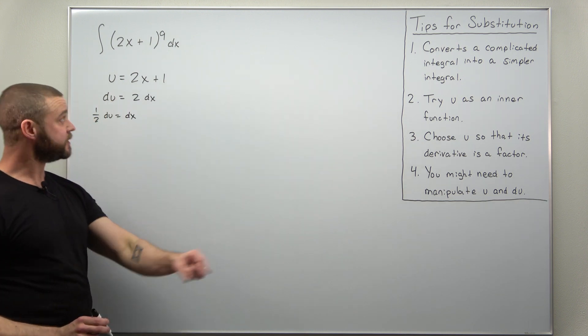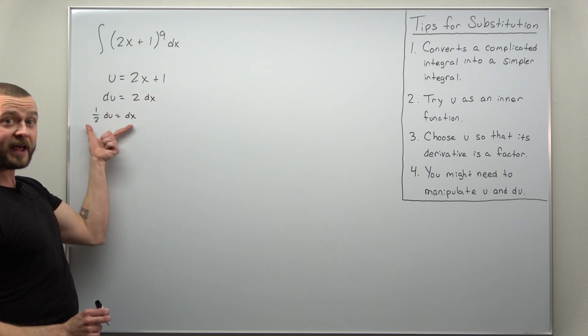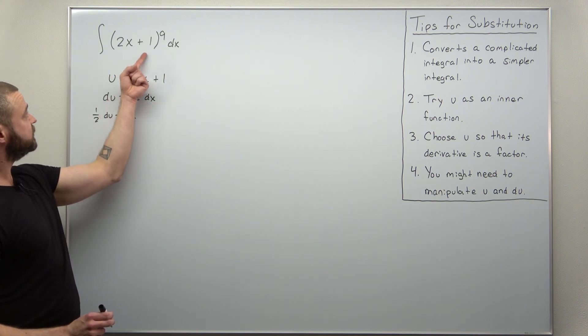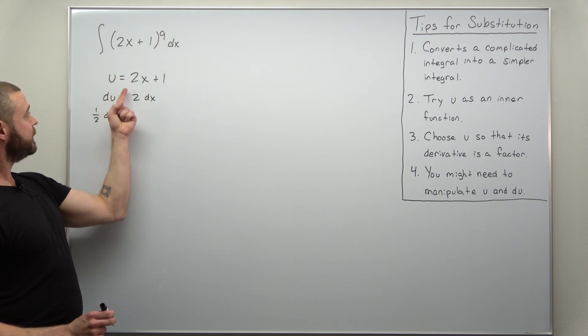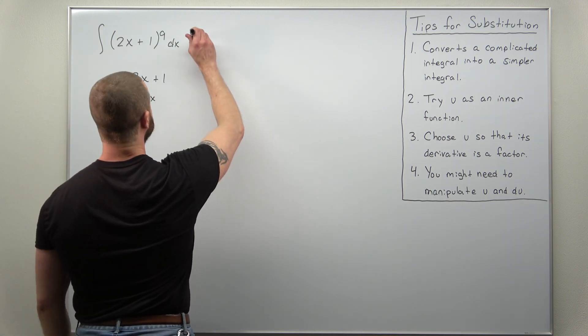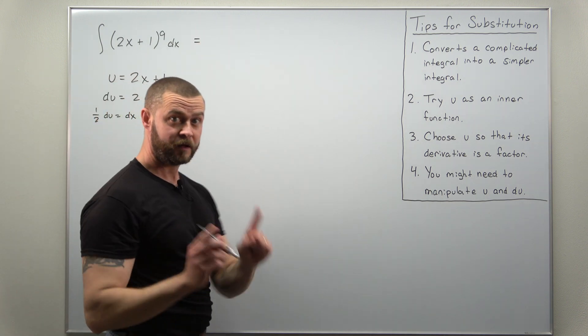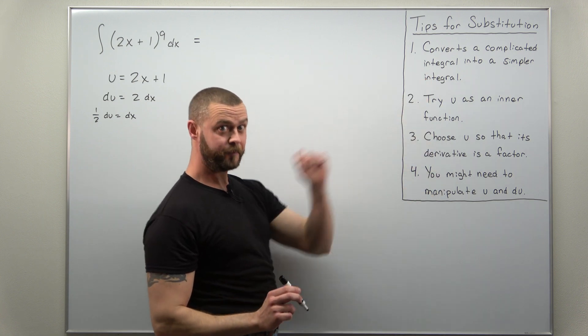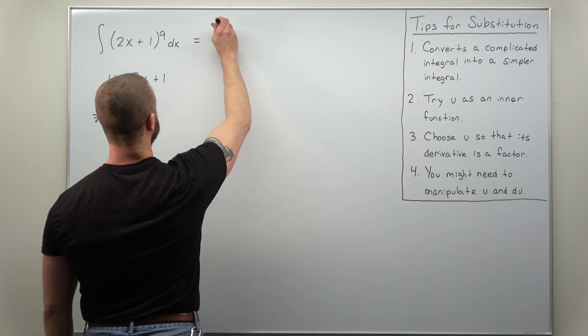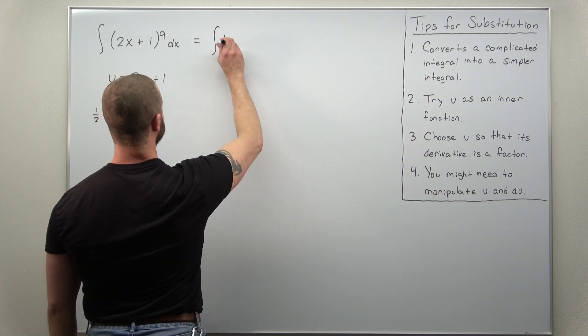So now if we convert everything, dx converts to 1 half du and 2x plus 1 to the 9th power, that's going to convert to u to the 9th. So our new simpler integral, that's the important part here, we get an integral that's simpler than what we started with.